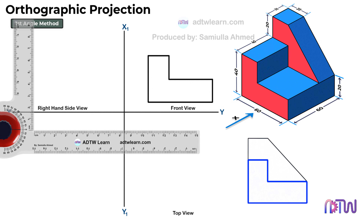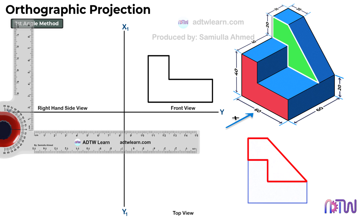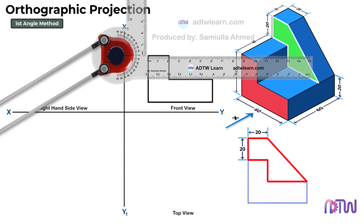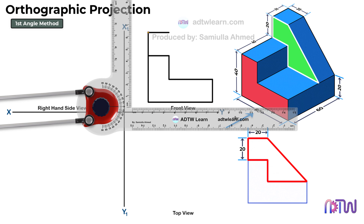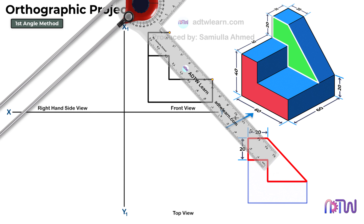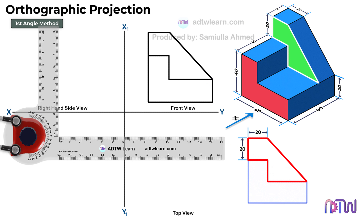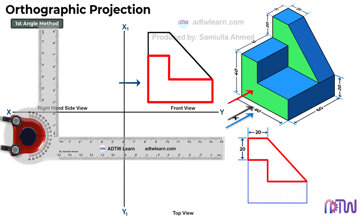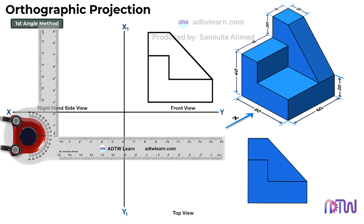Next, when we look from the front view, we can also see this section, which will look like this in the front view. We also have to draw this section. The height of this section from this point is 20 millimeters, and this width is 20 millimeters — only these two dimensions are enough to construct this section. Draw a vertical line of 20 millimeters from this point, then a horizontal line of 20 millimeters, and finally join these two points with an inclined line. This is the final required front view of the object.